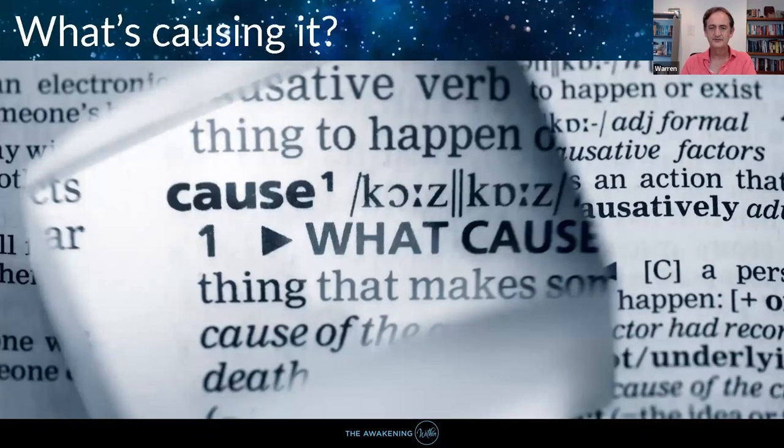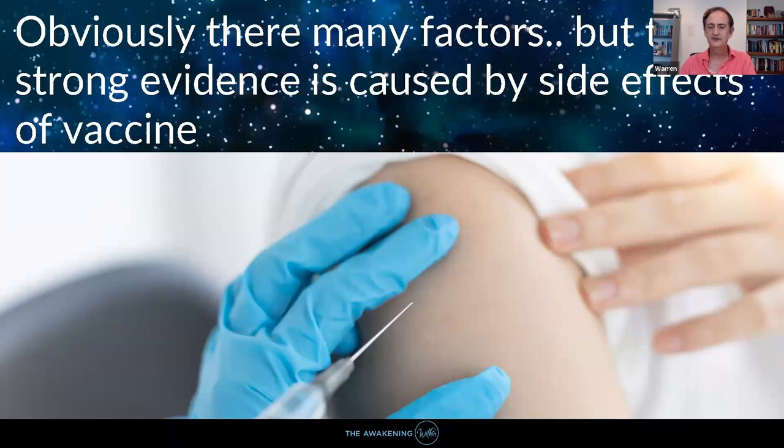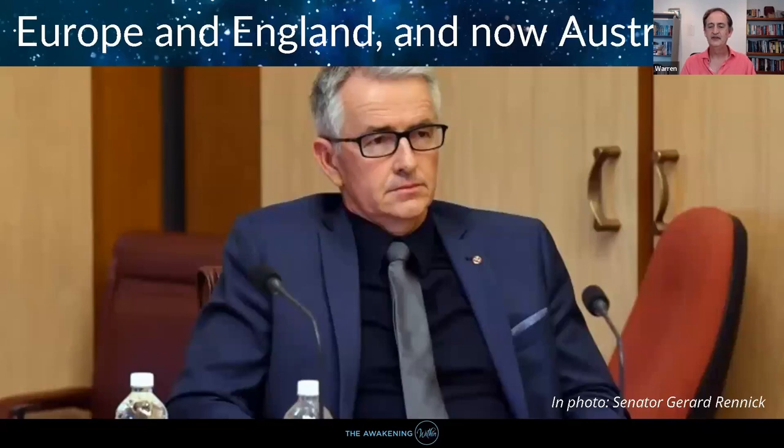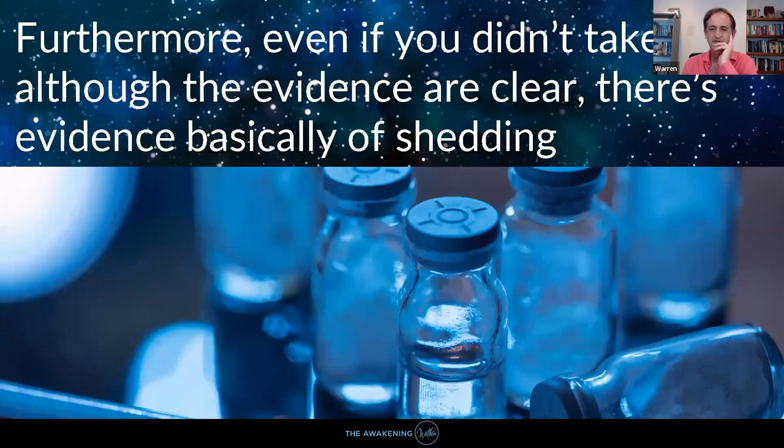In terms of what's actually causing it, well obviously there are many factors really. There's lots and lots of evidence coming out now showing that side effects of the vaccine is one of them. Many reported injuries, side effects and issues are now starting to come forward. Europe, England, and now Australia and all kinds of different places. There's lots of evidence now to this. Even if you didn't take it, there's pretty clear evidence basically of shedding.